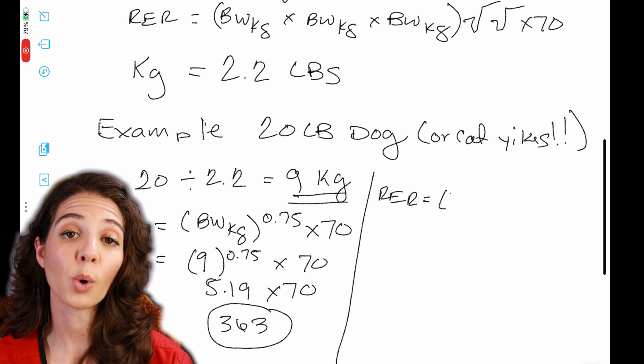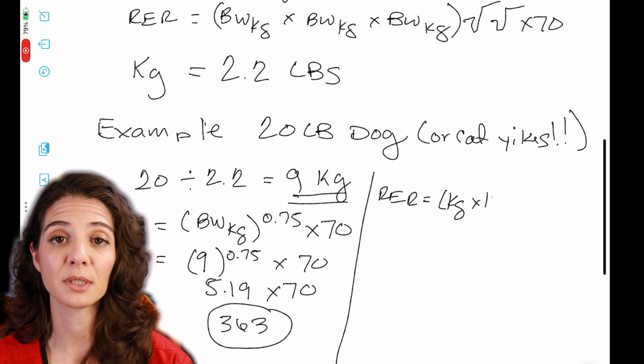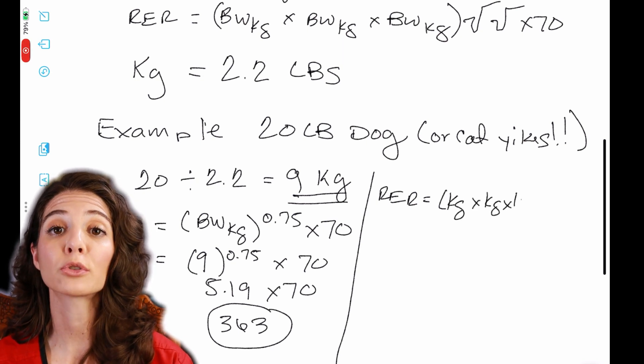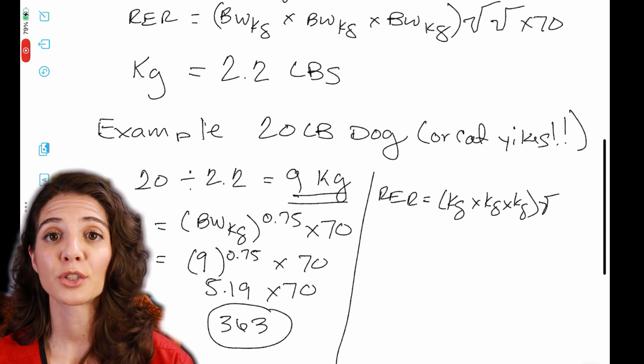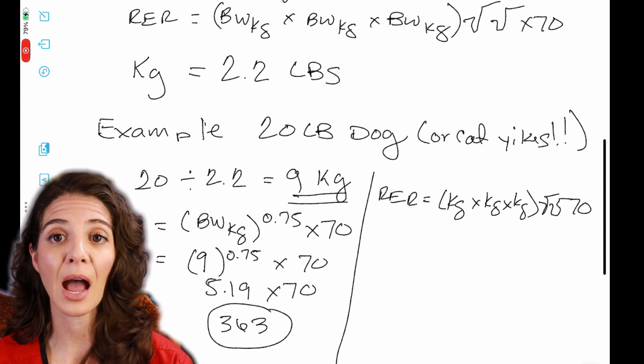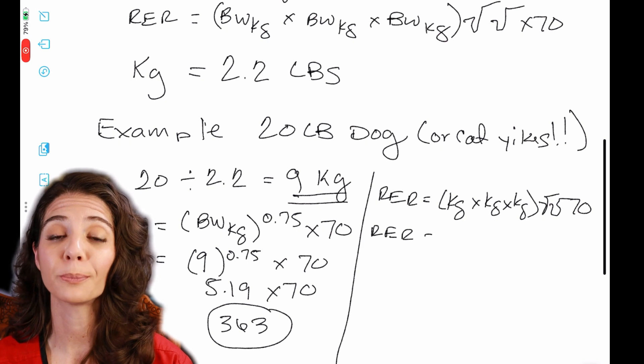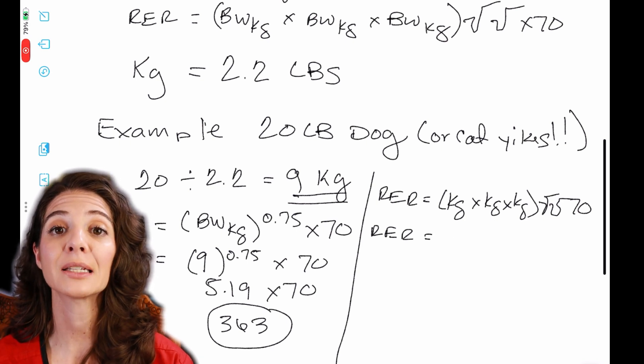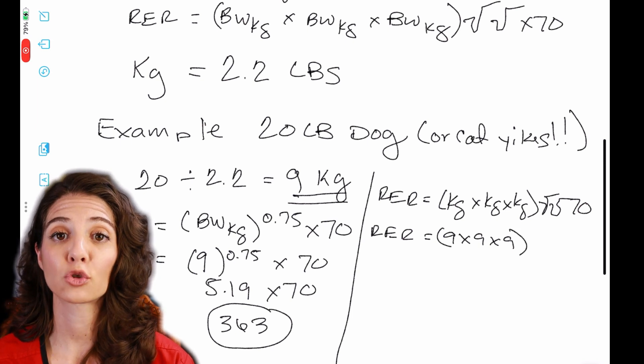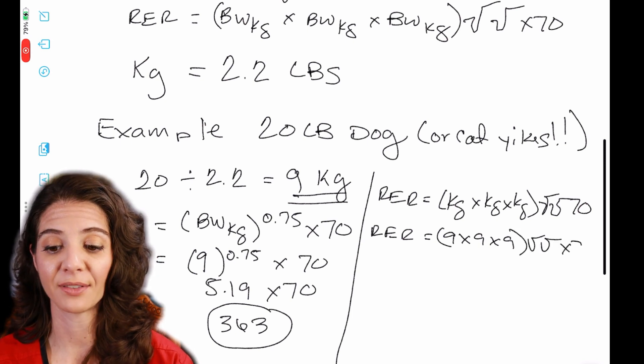So the resting energy requirement is the body weight in kilograms times itself three times square root, square root times 70. So for this one, we're going to pull an app that has an old school calculator that has the square root. And we're going to use that. So nine times nine times nine hit the square root button once, twice, and then multiply it by 70.